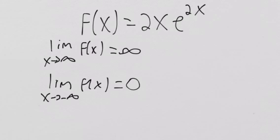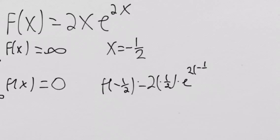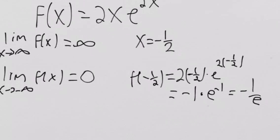Part C might throw you off a little bit because you might not have thought about the range for a while, but it's a good way to show you understand what's going on with the absolute minimum. From part A, we know that as x approaches infinity we go to infinity, and as x goes to negative infinity we go to 0. The absolute minimum value will tell us how low the function goes. We just found that at x = -1/2, that's the absolute smallest the function will get. So we plug in -1/2: f(-1/2) = 2·(-1/2)·e^(2·(-1/2)) = -1·e^(-1) = -1/e, which is smaller than 0. So our range goes from -1/e to infinity.